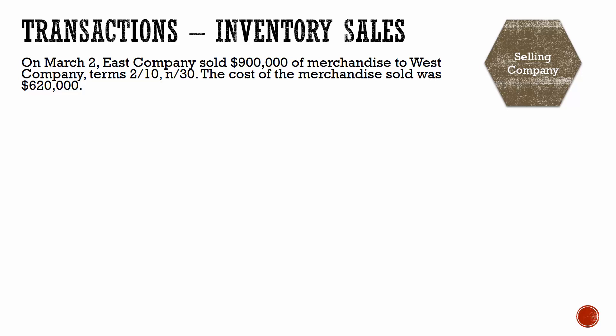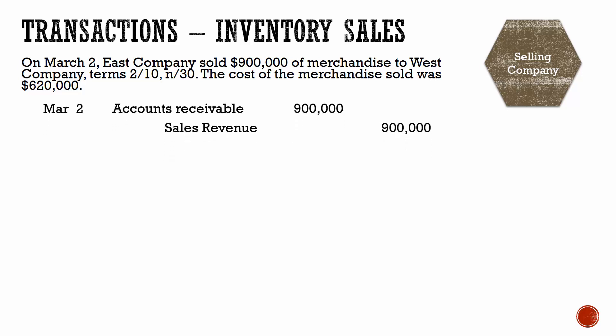On March 2nd, to record the sale, we would debit accounts receivable and credit sales revenue for the $900,000. Now we know this isn't a cash sale because they gave us terms — you wouldn't need terms if somebody had already paid you in cash. So even though you don't see the words 'on account,' terms tell you that it is not a cash sale.